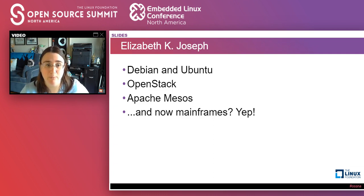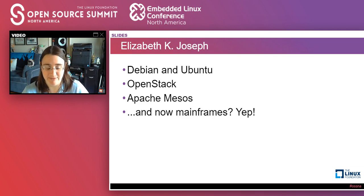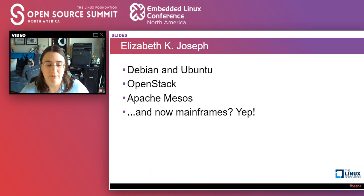Some of you may know me from my past work in the open source world. I've worked on Debian and Ubuntu — that's where I started. Then about eight years ago I started working on the OpenStack project as a member of the infrastructure team. Before I joined IBM, I was working on Apache Mesos, and later I started getting into Kubernetes.